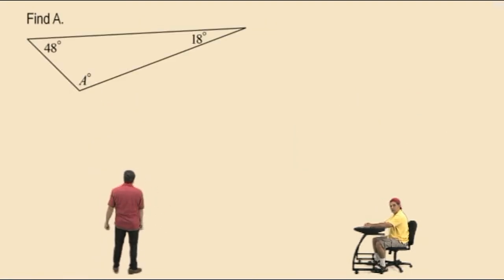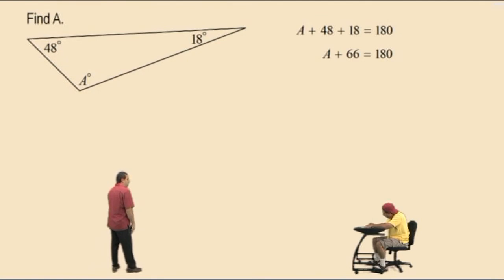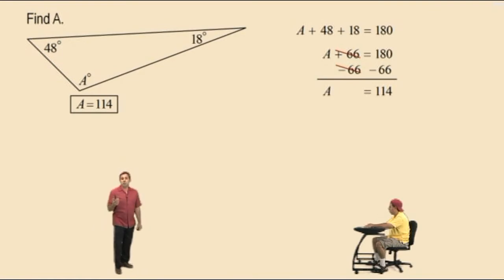Let's move on to this triangle right here. Find a where a degrees represents the measure of the angle we're trying to find. The sum of the interior angles of a triangle always sum to 180 degrees. So we can write an equation here: a plus 48 plus 18 equals 180. First, 48 plus 18 is 66. So we get a plus 66 equals 180. Subtract 66 from both sides. And we get a equals 114. Since a equals 114, then the measure of the angle we're trying to find is 114 degrees.